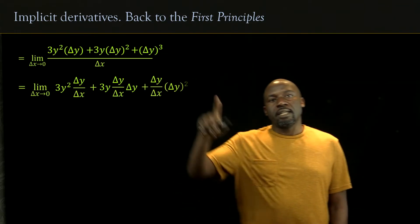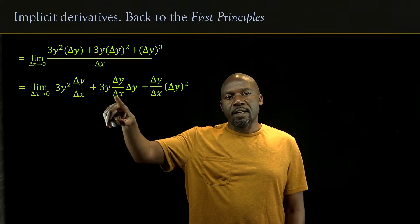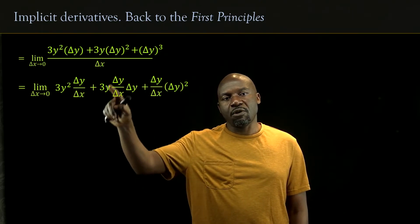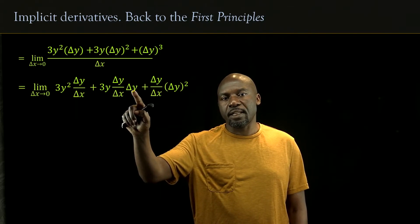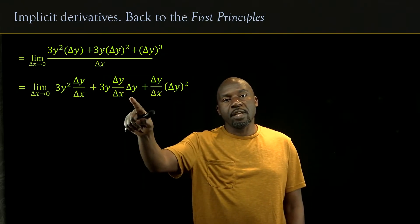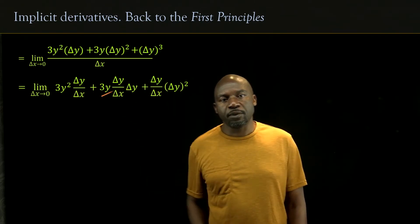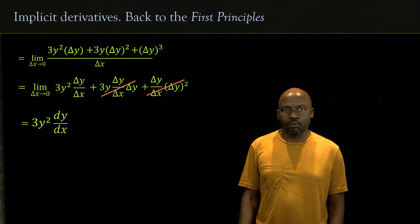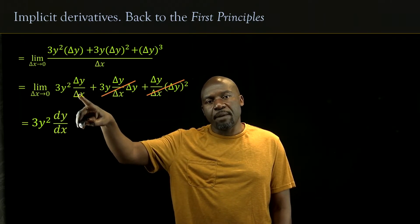I split delta y squared into delta y times delta y, so one goes with delta x and one delta y remains unassociated. Delta y over delta x never goes to zero because they are of the same order of magnitude. However, delta y by itself approaches zero as delta x tends to zero, so those terms disappear. We are left with 3y squared times delta y over delta x, which becomes 3y squared dy/dx.